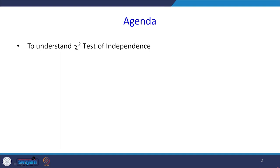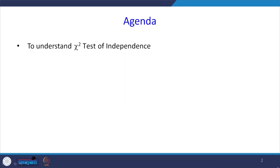The agenda for this class is to understand the chi-square test of independence. Before going to the topic, let us see when you will go for a chi-square test. At the beginning of the lecture I explained different types of data: nominal, ordinal, interval, and ratio. Whenever the data is nominal or ordinal, you have to go for a chi-square test, because for nominal data you cannot use Z-test, T-test, ANOVA, or regression.